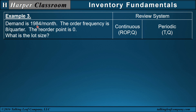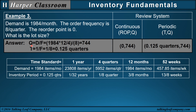Example 3: My demand is 1,984 per month, my order frequency is 8 per quarter, and the order point is 0. What's the lot size? The fundamental equation is Q equals D over F. Since my frequency is in quarters, I have to transform my demand from months to quarters. I recommend going from months to years first — multiply by 12 — and then years back to quarters — divide by 4. Then divide that by my quarterly order frequency of 8, and there's my lot size. My inventory period is the reciprocal of my frequency: 1 over 8 is 0.125 quarters. And there's my inventory policy.